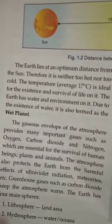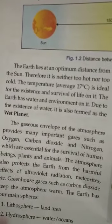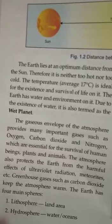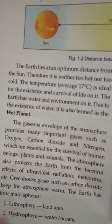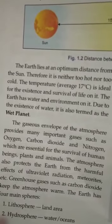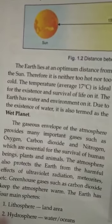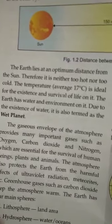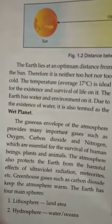Along with that, the atmosphere also protects the earth from the harmful ultraviolet radiation which comes from the Sun — it doesn't allow these radiations to reach the surface of the earth. Secondly, meteorites which sometimes come towards the earth burn up when they enter the atmosphere due to friction, and we call them shooting stars.